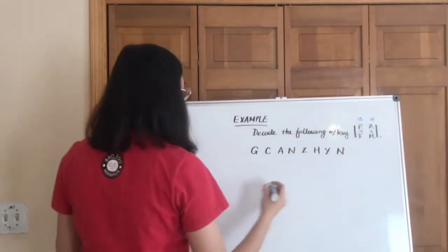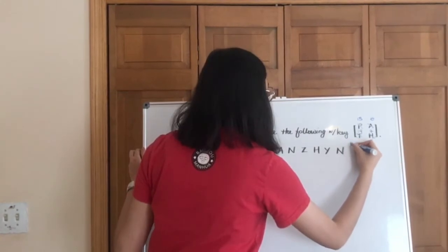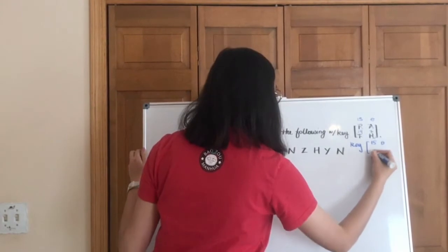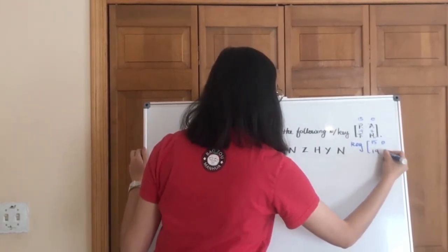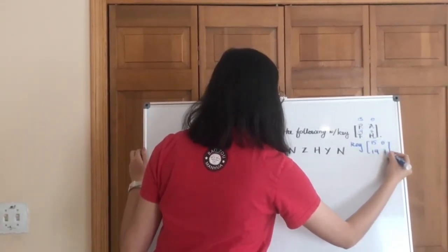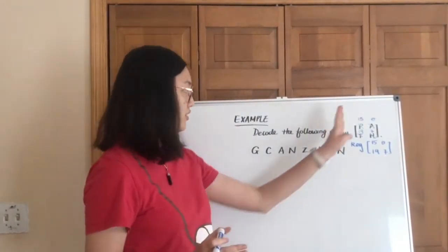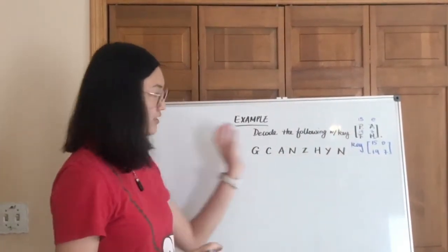So now we know that our key is actually 15, 0, 19, 7. This will be very helpful later on. And then also, once you transfer those letters into numbers, let's take care of the rest.